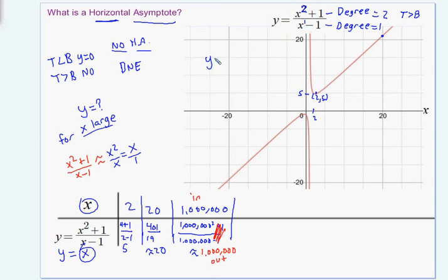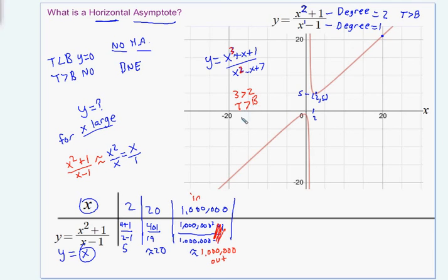To generalize: video 1 had the case where the degree on top was less than the degree on the bottom, giving a horizontal asymptote y equals 0. In this video, the degree on top is bigger — here it was 2 versus 1 — so there's no horizontal asymptote ever. It doesn't matter what the actual numbers are as long as the numerator's degree is bigger. For example, y equals x cubed plus x plus 1 over x squared minus x plus 7 would be the same result: degree 3 on top, degree 2 on bottom, so no horizontal asymptote.